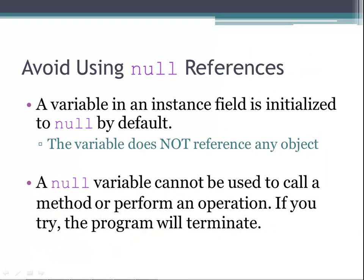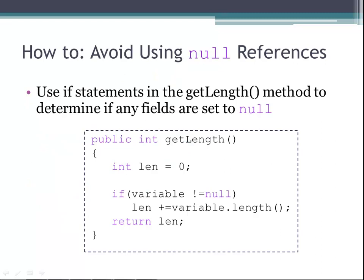Avoid using null references in your aggregate classes. A variable in an instance field is initialized to null by default — the variable does not reference any object. A null variable cannot be used to call a method or perform an operation; if you try, the program will terminate. One way to avoid using null references is to use if statements in the getLength method to determine if any fields are set to null. Here's an example: we initialize an int variable to 0, check to see if a given variable is equal to null, and if it's not null, we get the length of that variable and add it to the length variable. If it is null, we simply return length, which would be 0.